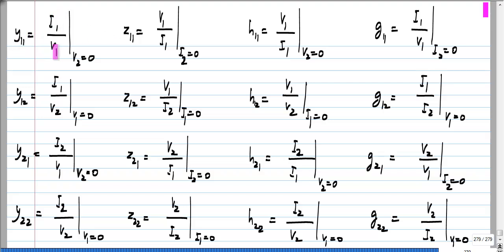We are taking the ratio I1 by V1, whereas for Z11 we are taking V1 by I1, but Y11 is measured with port 2 short circuited, while Z11 is measured with port 2 open circuited.